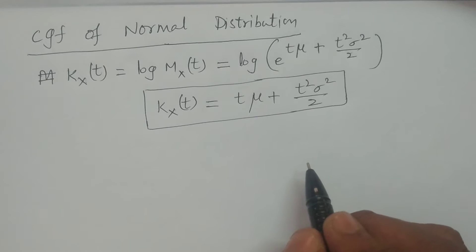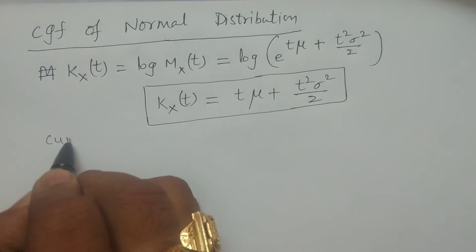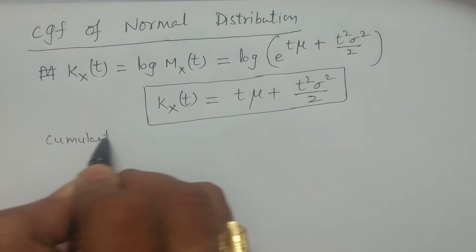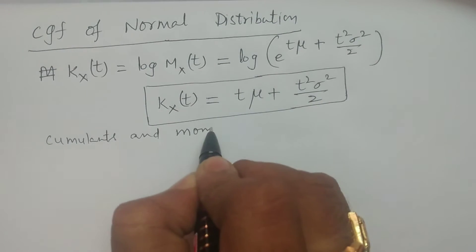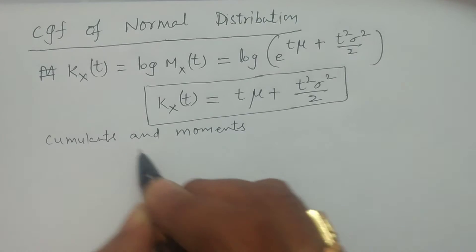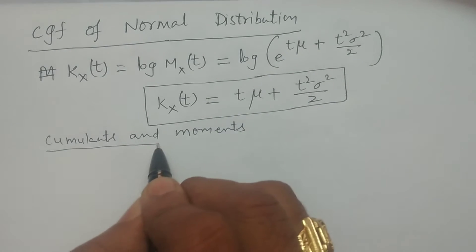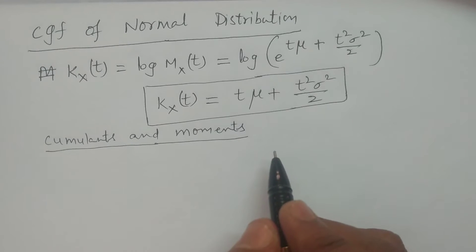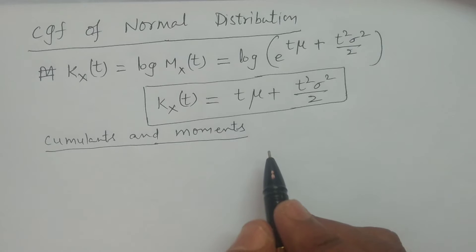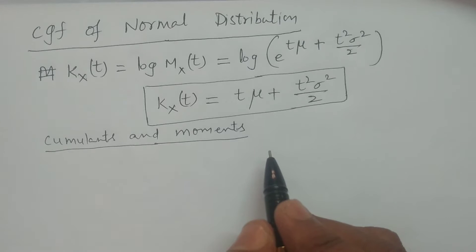Now from this we calculate cumulants and also the moments. The first moment is mean, the second moment is variance μ₂, the third moment is μ₃, and the remaining all moments are central moments.